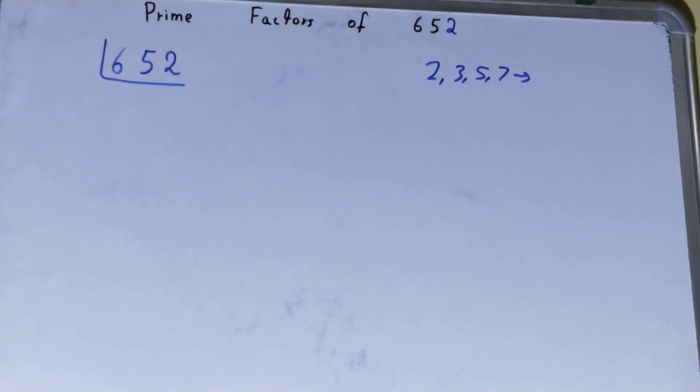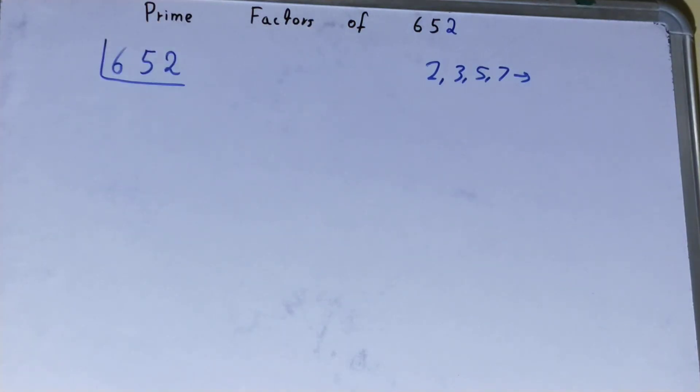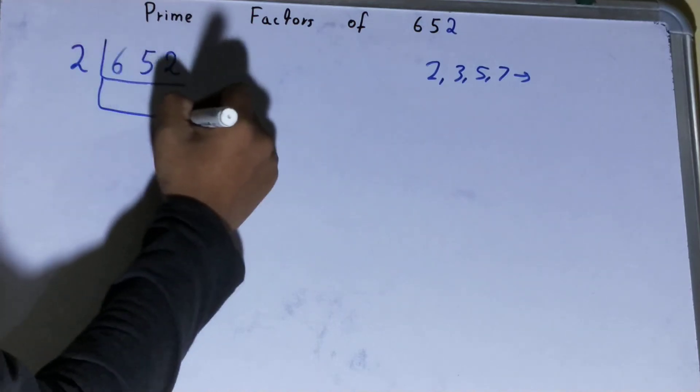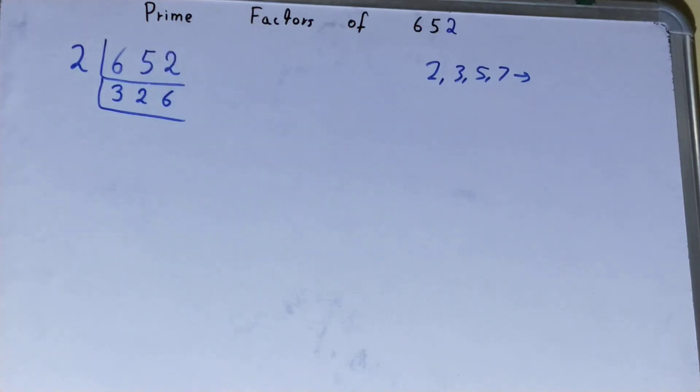We will be starting with the lowest prime number we have, that is 2. Is the number 652 divisible by 2? Clearly it is, because 652 is an even number. So divide it, and we will be left with 3, 2, 6.